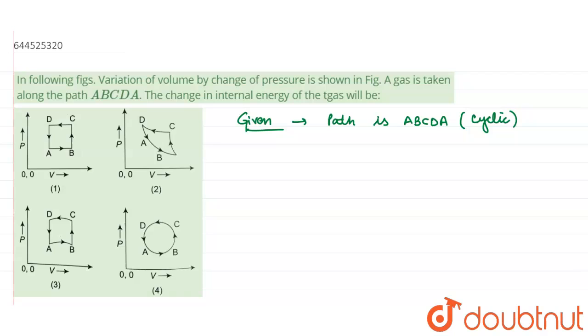And it is given that variation of volume by change of pressure—these graphs are between the variation of volume by change of pressure—and we have to find out the change in internal energy. Internal energy basically is the sum of all energies present in the system.